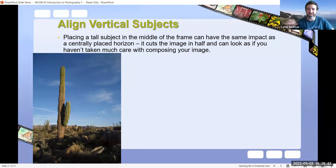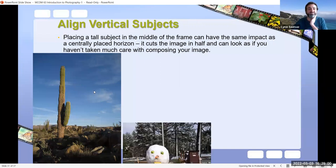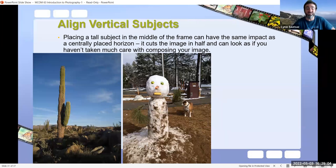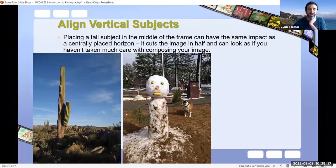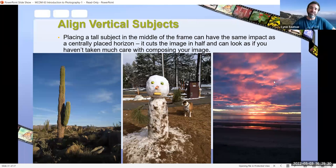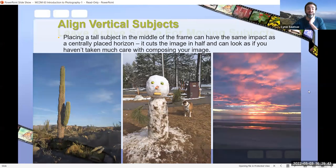This photo was taken on the Lost Coast of far northern California in Humboldt County during an incredible blazing sunset. I set my horizon line in the bottom third so that two-thirds of the photo covers the incredible lighting on the clouds, while the one-third still captures the ocean. It just depends on what you want to emphasize. You also want to align vertical subjects — placing a tall subject in the middle cuts the image in half. For example, with these huge cacti in Baja California, I aimed slightly to the left following the rule of thirds, not the middle.